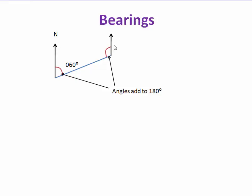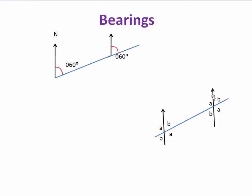The north lines can be considered as parallel lines and the line joining them as a transversal. These two angles then become supplementary angles — they add up to 180 degrees. So if this was the 60-degree angle, the other angle would be 120 degrees, since 120 plus 60 equals 180. The north lines are parallel lines cut by a transversal.